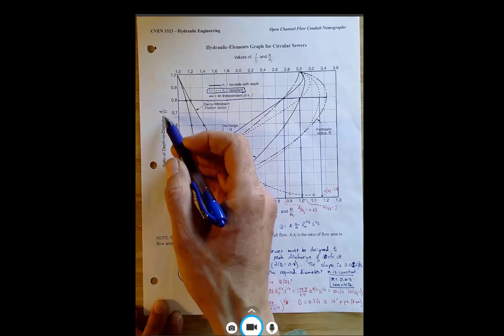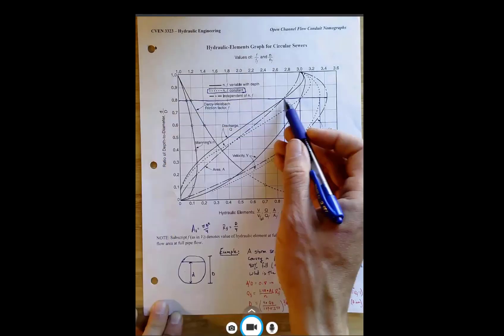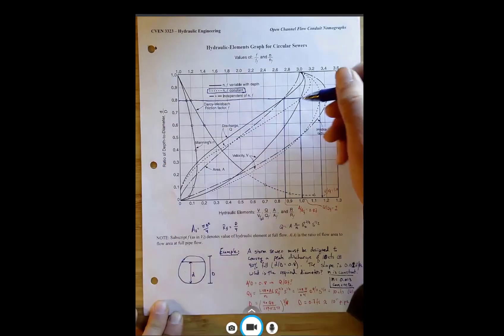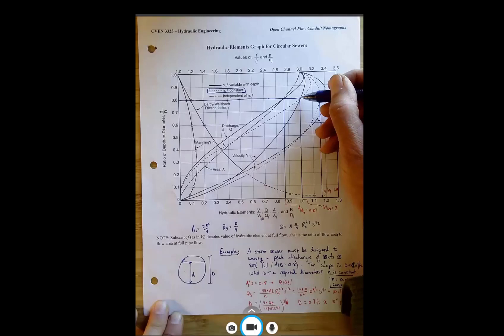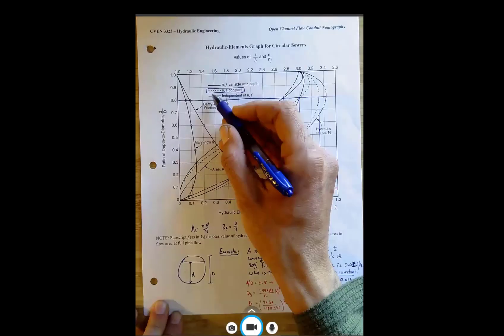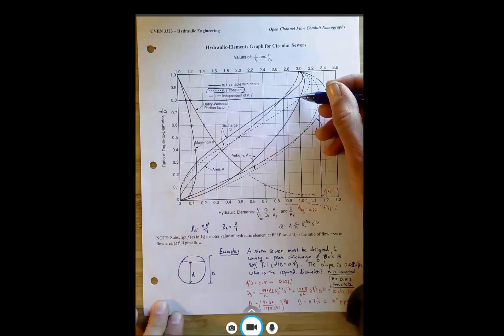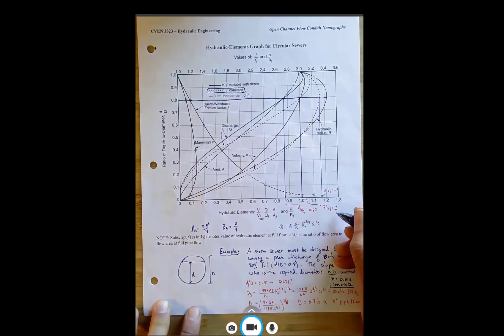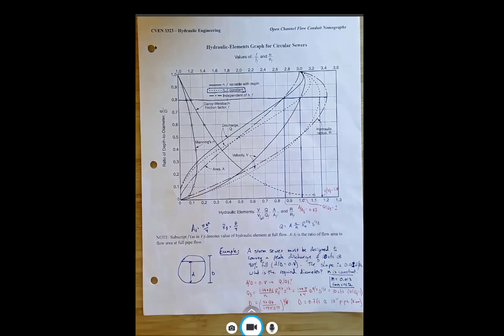We can come across until we hit q and here it's Manning's n doesn't change with depth. So it's this dashed, this dotted line right here. So we come down, we find out that q over qf is actually equal to one. So it's the same discharge as we would get at 0.8 as we would get if the pipe were full.